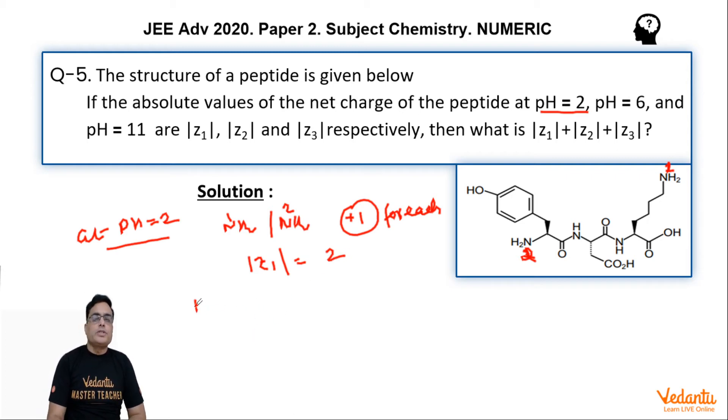Now at pH equal to 6, it will form a zwitterion. When it forms a zwitterion, then NH2 of lysine and COOH of aspartic acid will be in the zwitterionic form. So overall, one is plus and one is minus - it becomes 0. That means mod z2 is 0.